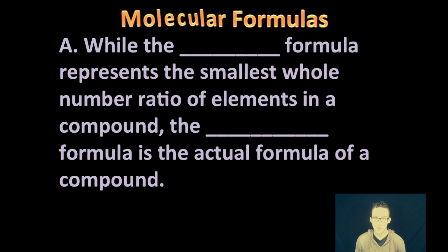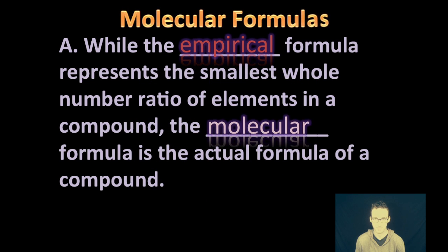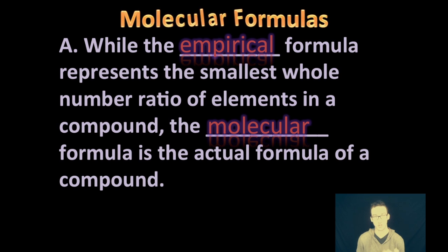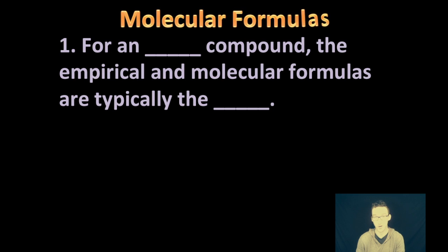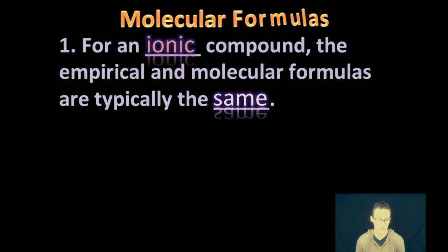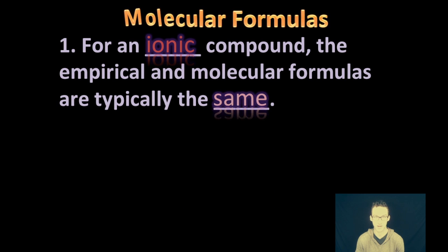Which brings us to the idea then of molecular formulas. Empirical formulas are going to show us the smallest whole number ratio of elements in a compound. It's the molecular formula that shows us the actual formula of a compound. Now, for ionic compounds, typically the empirical and molecular formulas are the same. Again, just by the nature of how we write ionic compounds, those two things, empirical and molecular, will be the same.